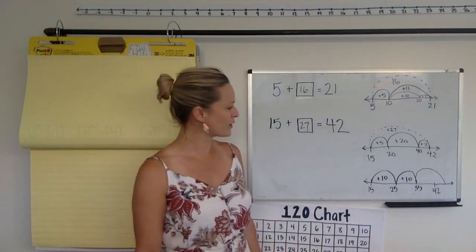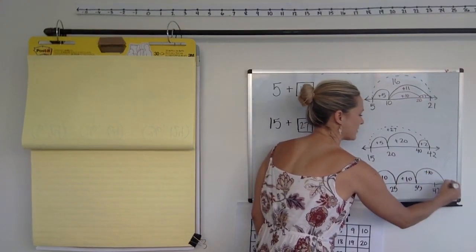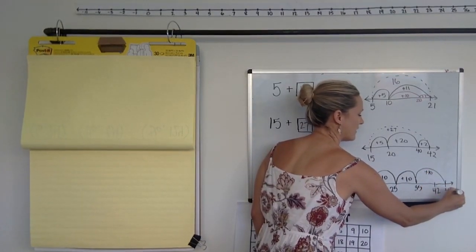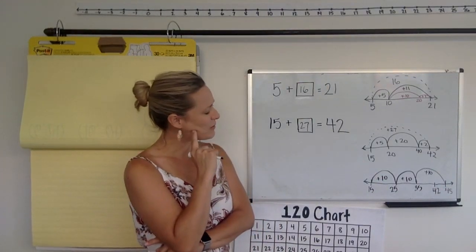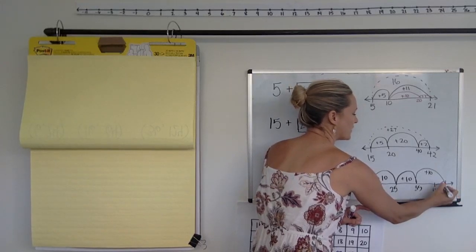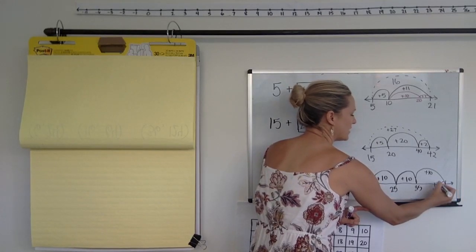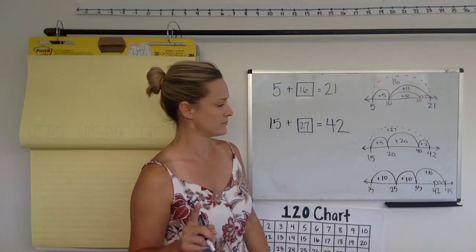But then that would get me to 45. So, another hop of 10 would get us to 45. And maybe some of you were like, oh, I would have to take off 3. I'd have to hop back 3. 45, 44, 43, 42. To get to 42.